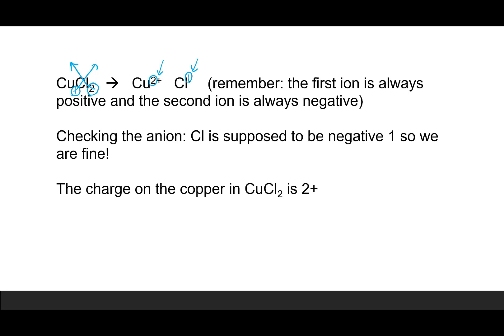The first ion in an ionic compound is always positive, so we're always positive before negative. Now we need to make sure there hasn't been a simplification and that the anion is correct. Chlorine is supposed to have a negative one charge based on its position on the periodic table, so we are fine. The charge on the copper in CuCl2 is 2+.